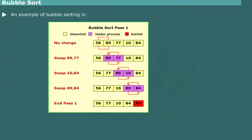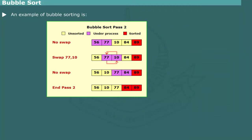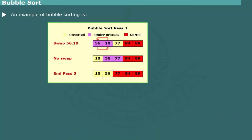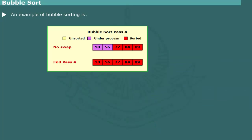An example of bubble sorting: In the first pass, the first two elements 56 and 89 are compared — since these are in order, no exchange is required. Next, elements 89 and 77 are considered; being out of order, these are swapped. Then elements 89 and 10 are compared and swapped, and elements 89 and 84 are considered and exchanged, bringing the largest element to the last position. In the second pass, elements in the first through fourth positions are processed; in the third pass, elements in first through third positions are considered. In the fourth pass, the array is sorted.